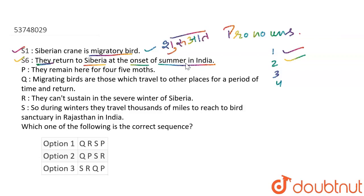Now let's see. They remain here for 4 to 5 months. Migrating birds are those which travel to other places for a period of time and return. Now, look at the first sentence about migratory birds — who is a migratory bird? Migrating birds are those which travel to other places for a period of time and return. So my first internal sentence is Q.